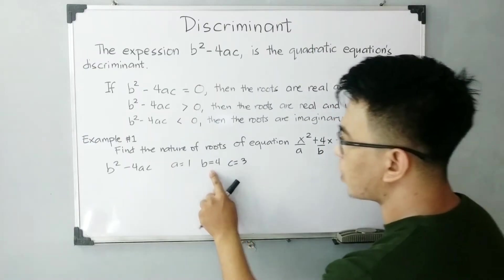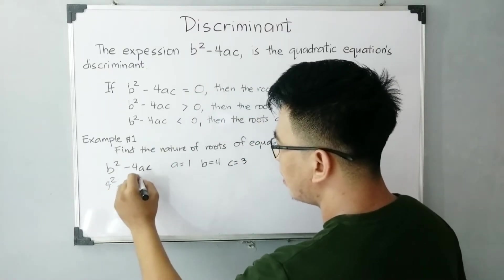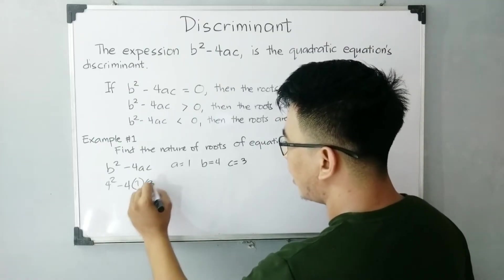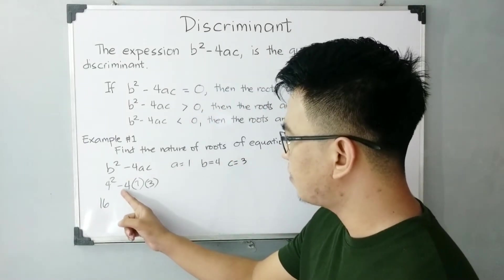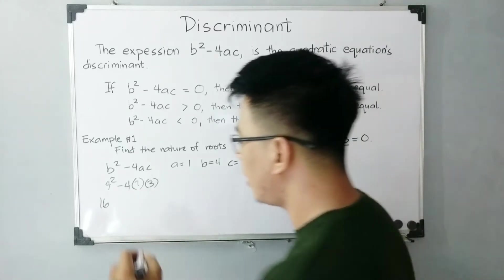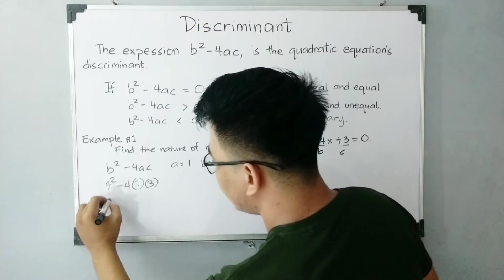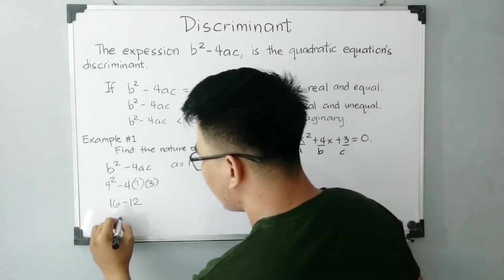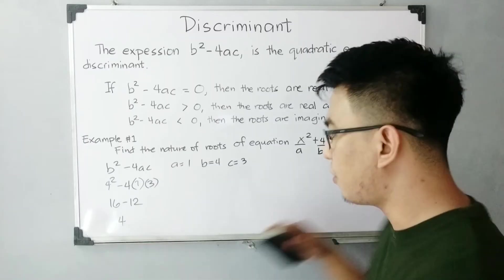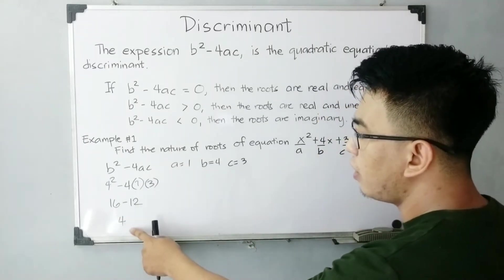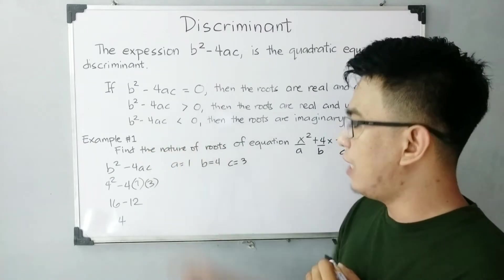Now, plug in the value of b which is 4. We have 4 squared minus 4 times a which is 1, times c which is 3. Simplifying: 4 squared is 16, and negative 4 times 1 is negative 4, times 3 is negative 12. So we have 16 minus 12, which is equal to 4. Your discriminant is equal to 4. Since 4 is greater than 0, it falls under that second condition.